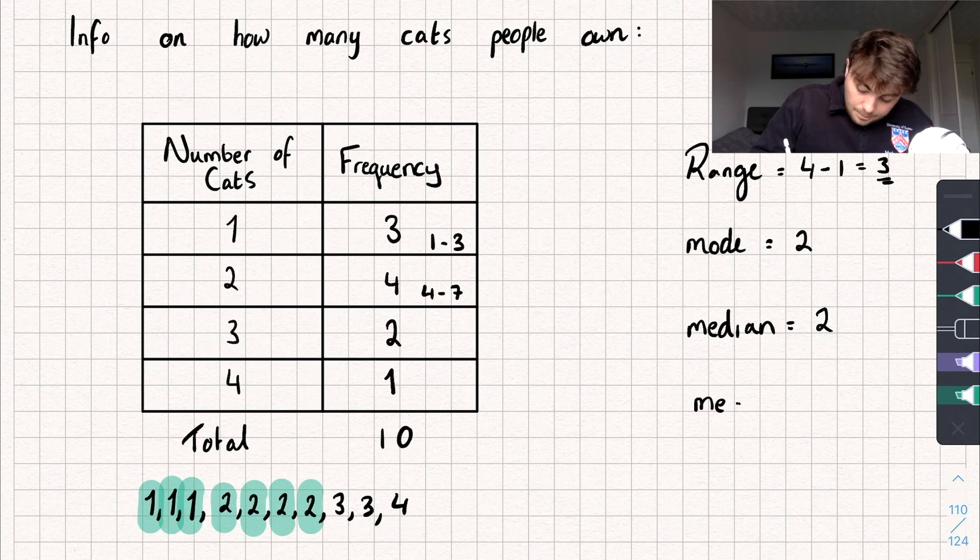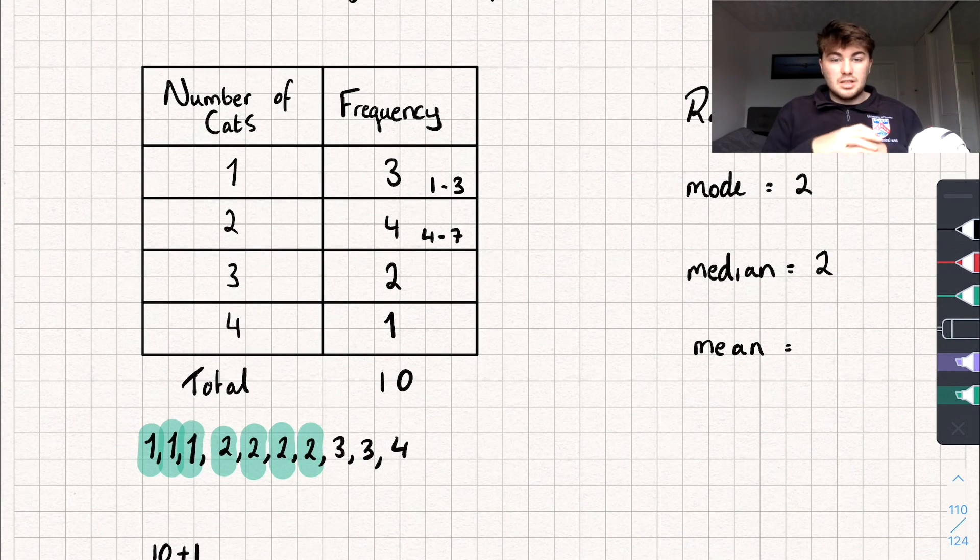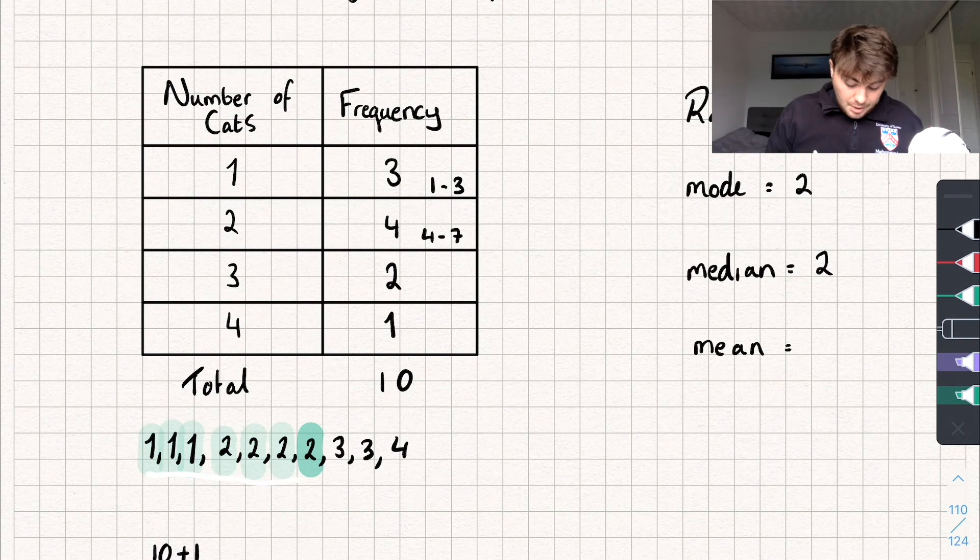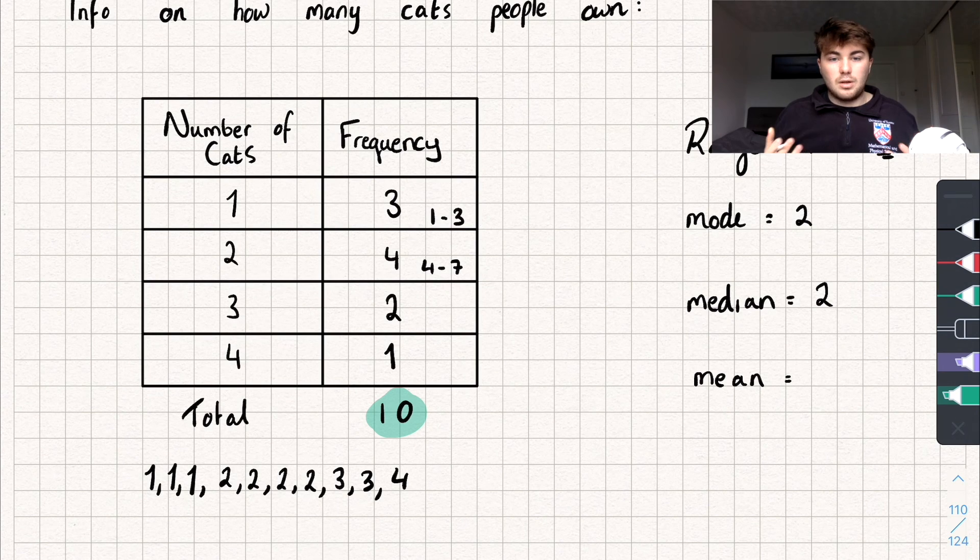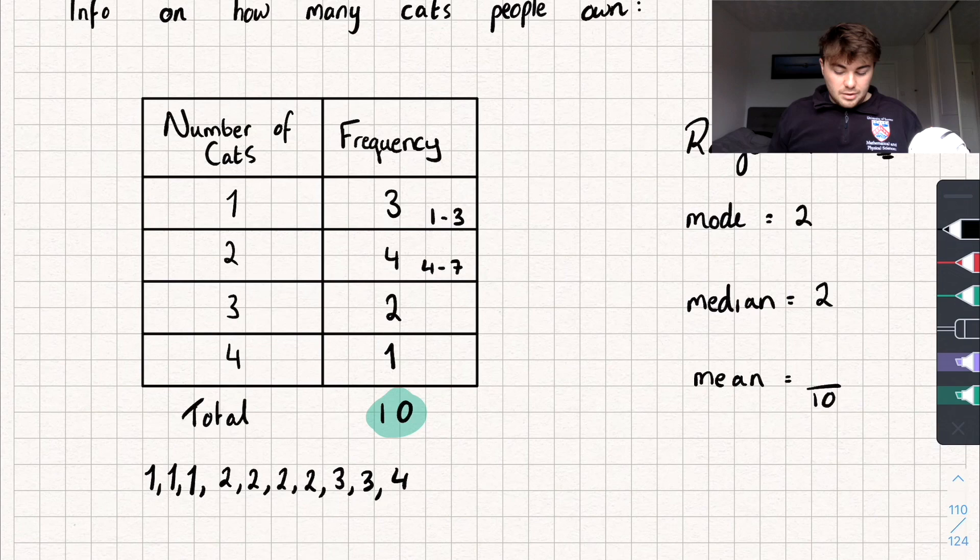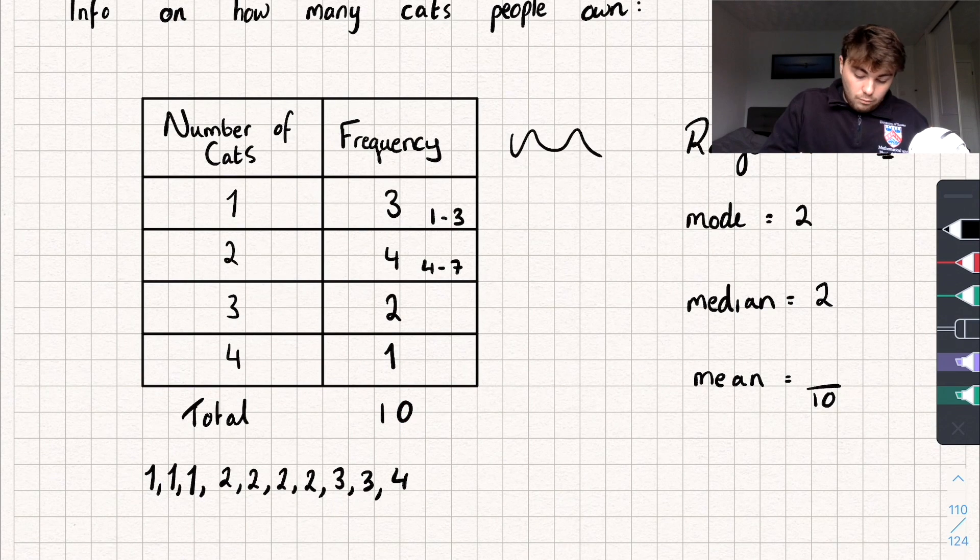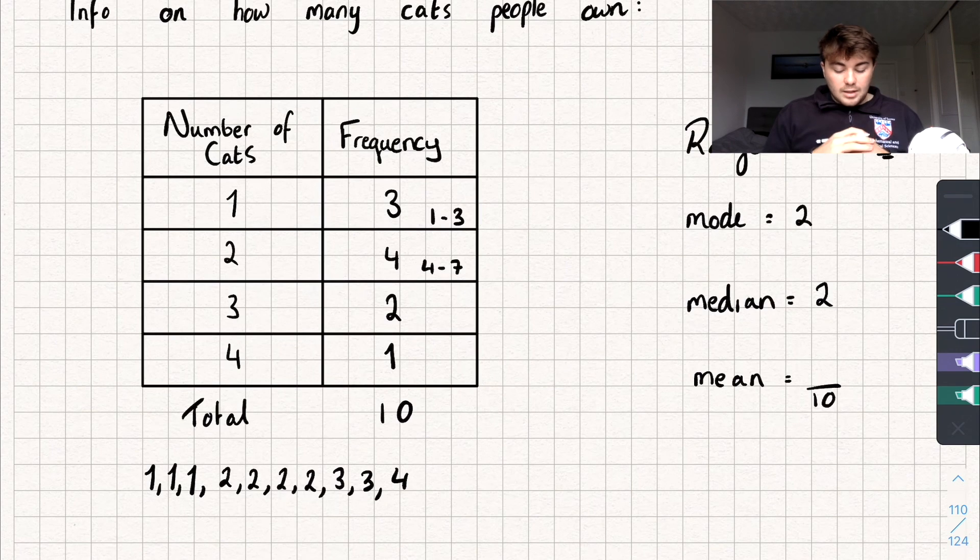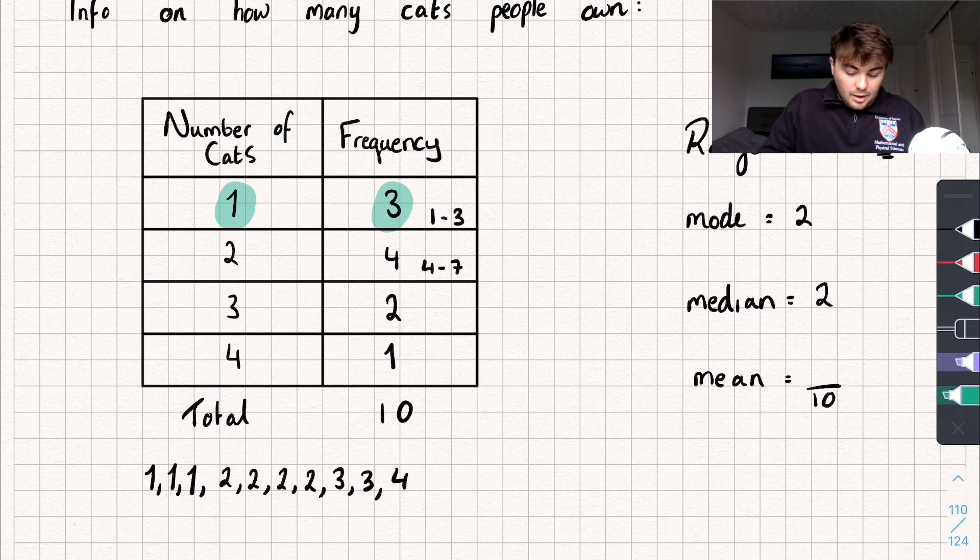And finally we want the mean average which is calculated by doing the sum of all the data divided by how many we've got. So instantly we've already worked out the total number of pieces of data. That's 10. So we could write that here. So now we need to find the total of the data using the table. And to do that we're going to add an extra row. And what we're going to do is we're going to multiply the number of cats in this example by the frequency.